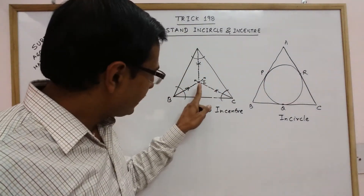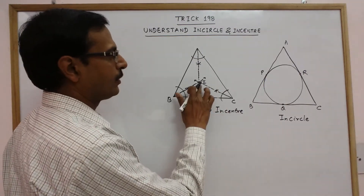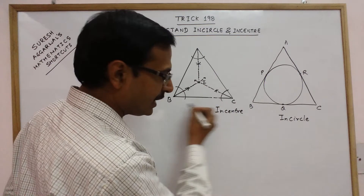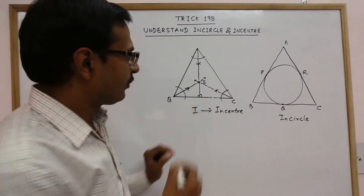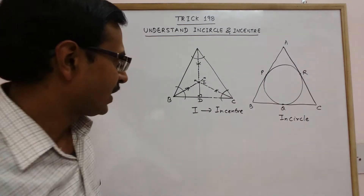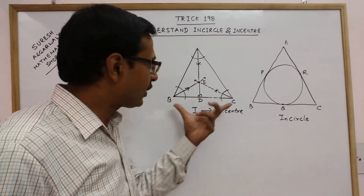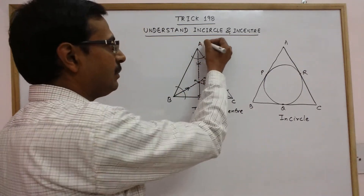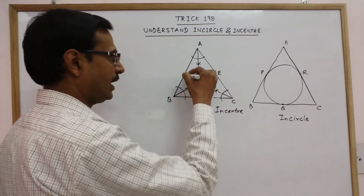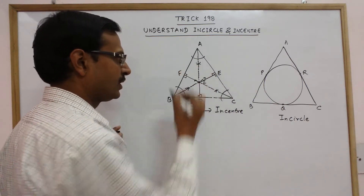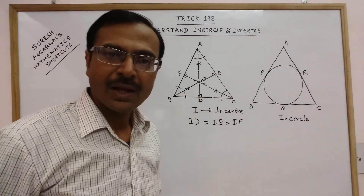Another property of this incenter: whenever you draw a perpendicular from point I to any side of the triangle, this perpendicular distance is the same whether you draw it on BC, AB, or AC. So I draw the perpendicular from I on BC and call this point D. All three perpendiculars ID, IE, and IF are actually equal.